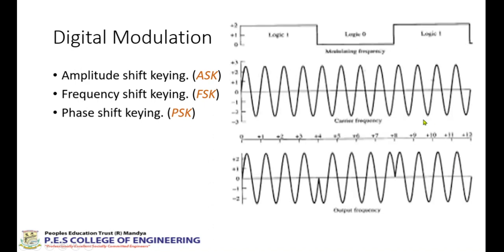The last scheme is Phase Shift Keying, where the phase of the signal is changed. Whenever I have logic 1, I use a signal with 0-degree phase shift — starting at 0 — and whenever I have logic 0, I use a signal that is 180 degrees out of phase. So you can see a phase shift from 0 to 180 degrees and 180 to 0 at each bit transition.